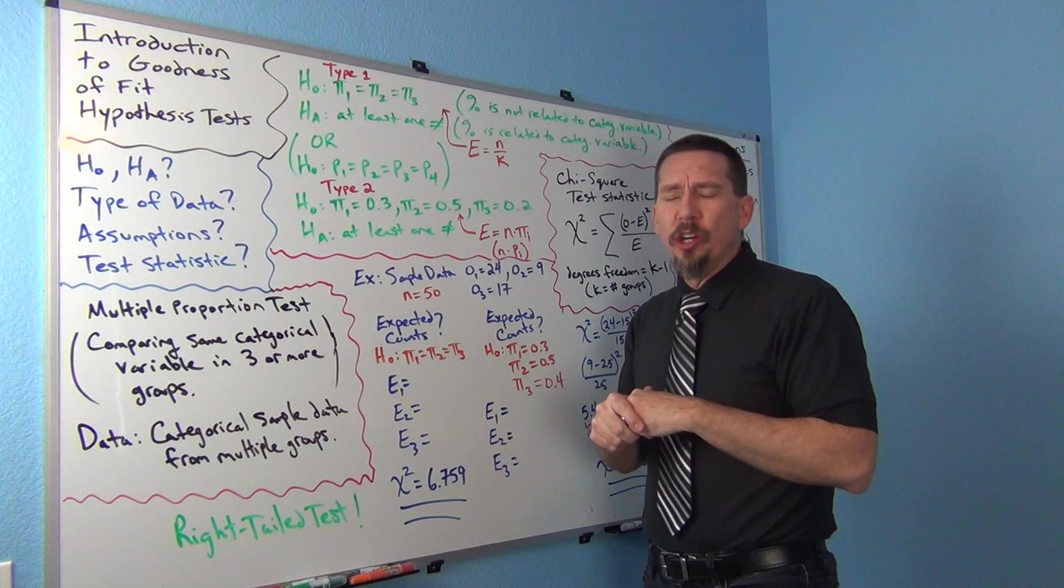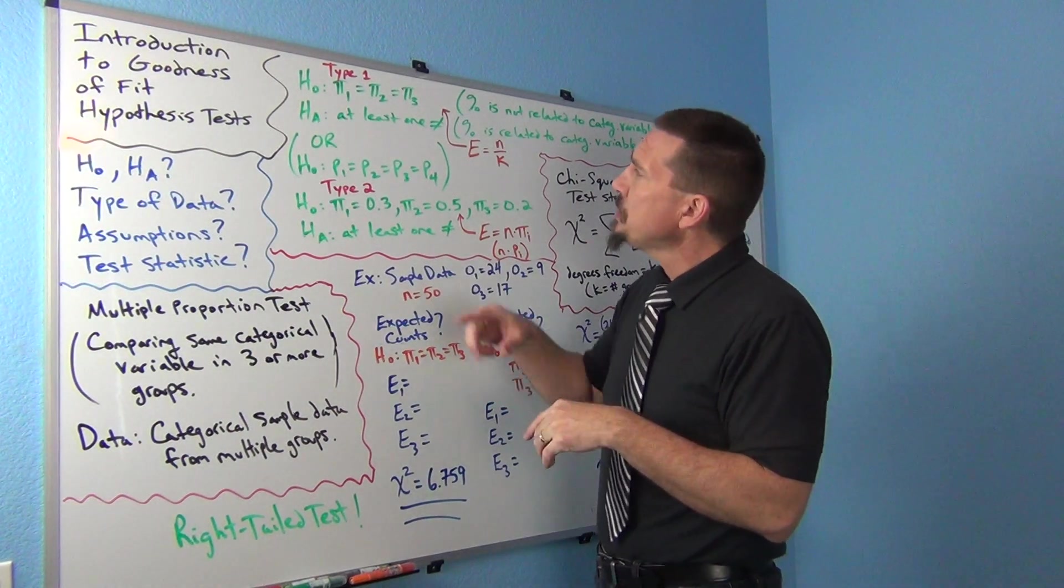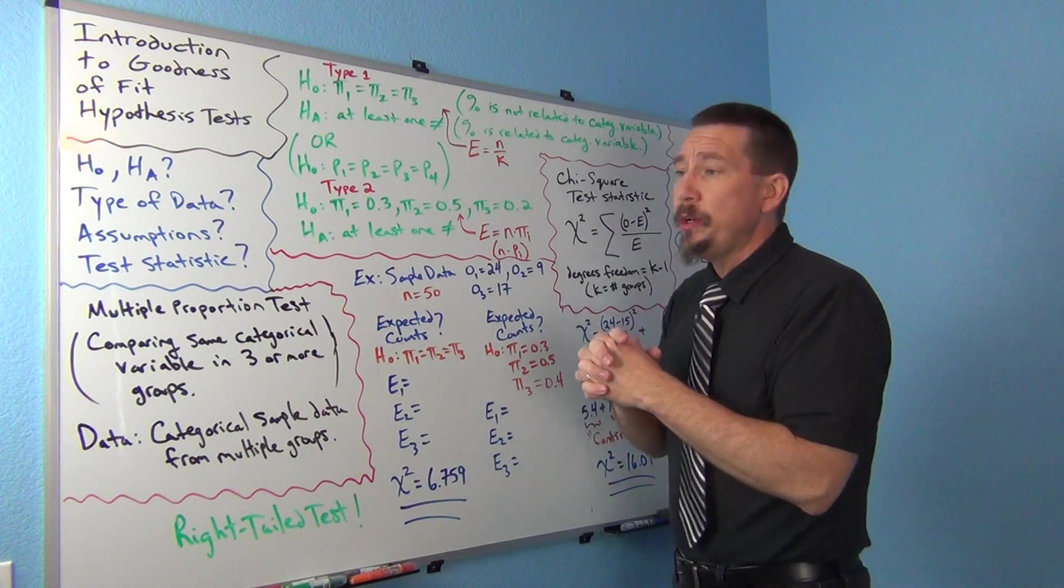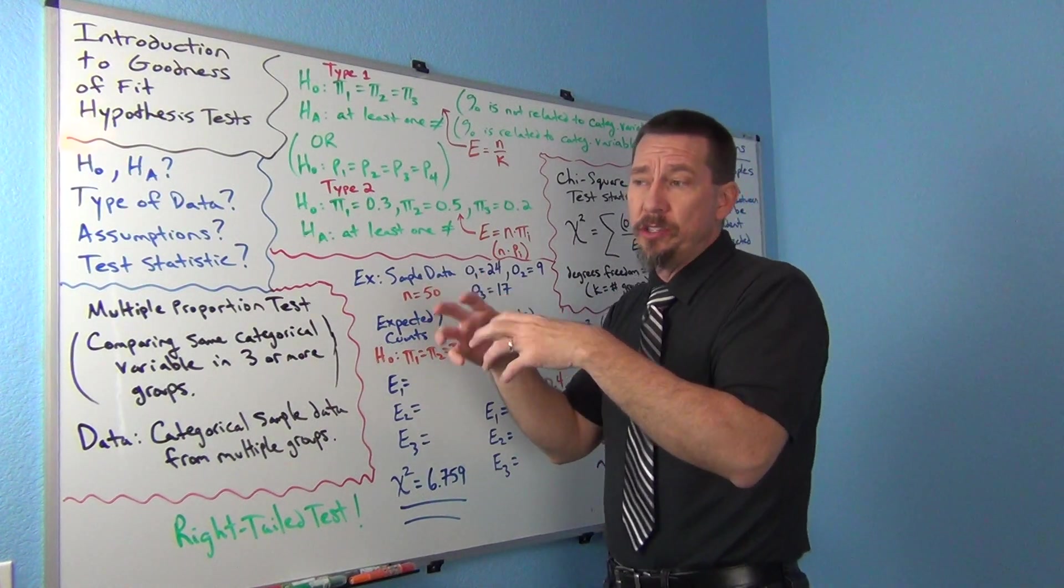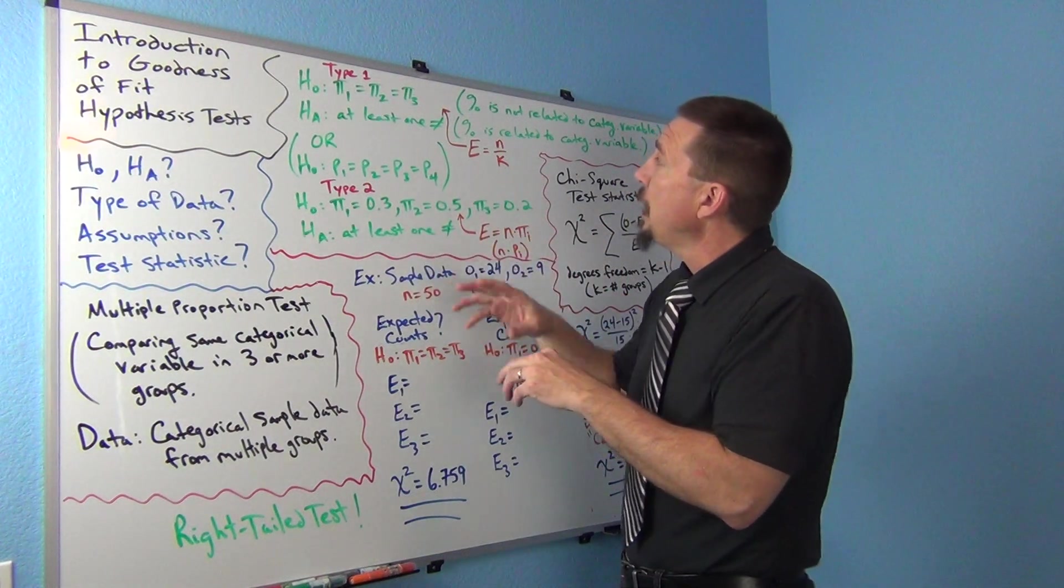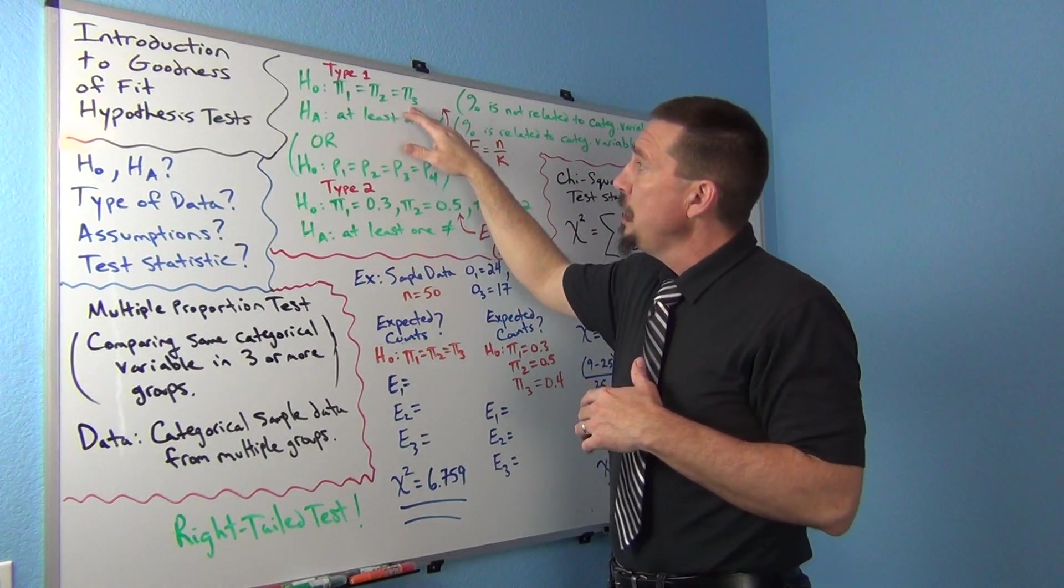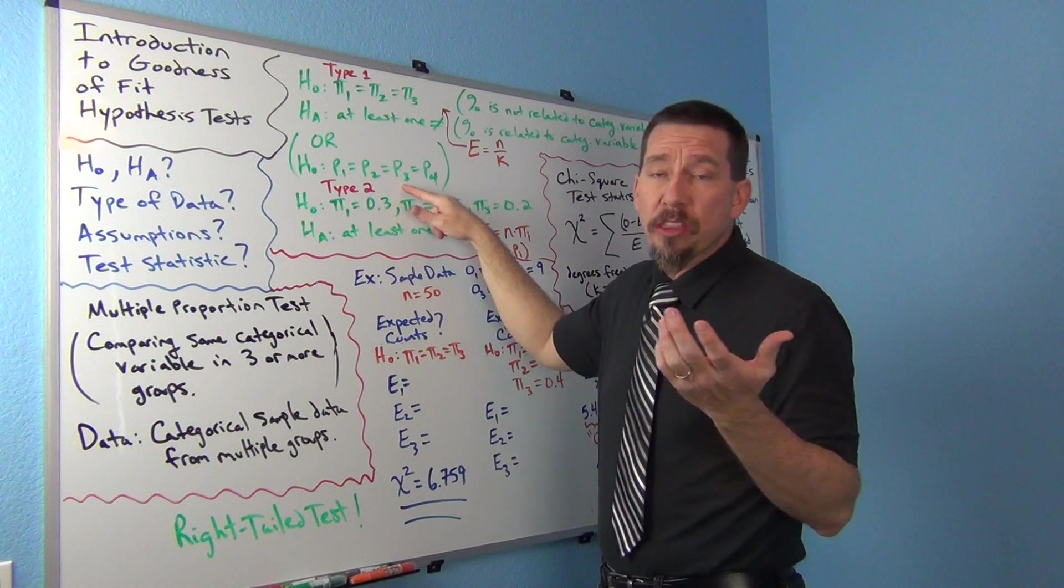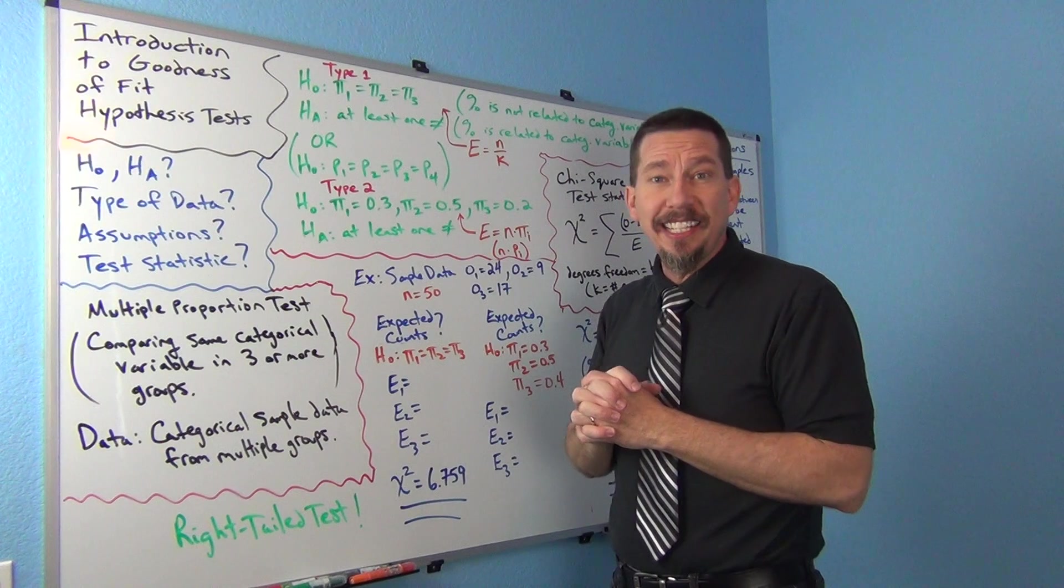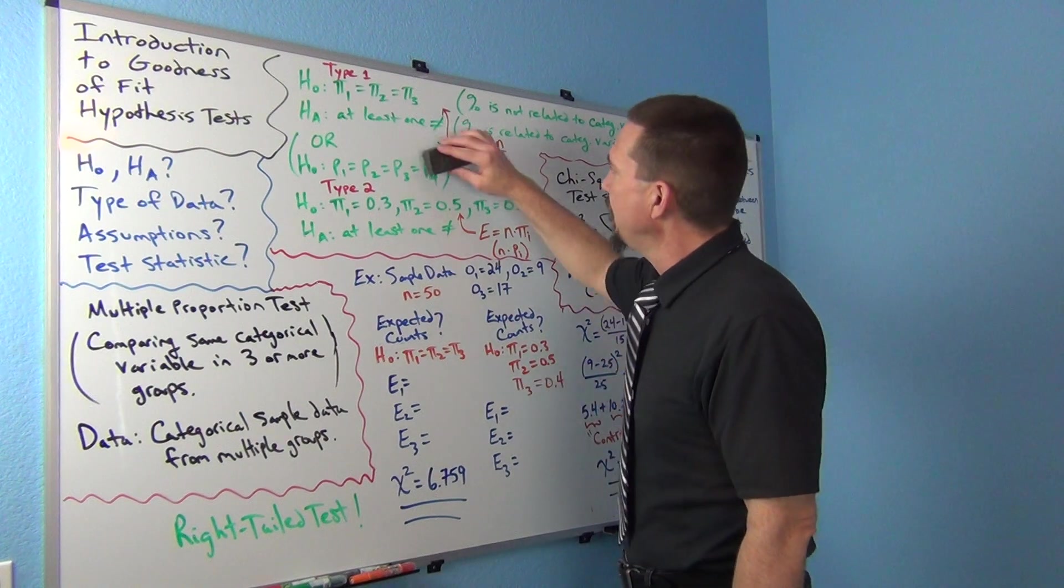Usually what you're dealing with is comparing a percentage in multiple groups, almost like the two population proportion test that we went over, but now it's adapted to three or more groups. So you can do this with 20 groups if you want. So there are two types of Goodness of Fit Test and this is what makes it a little bit complex.